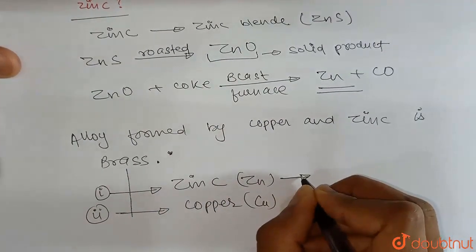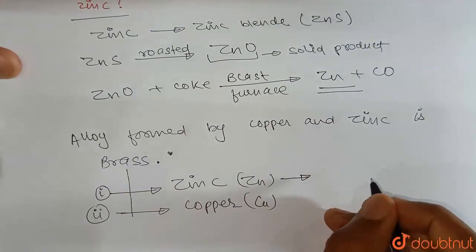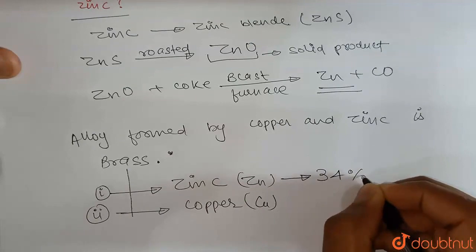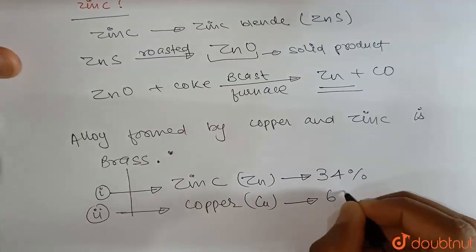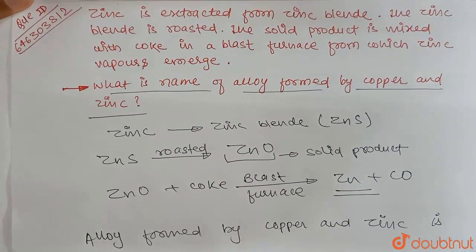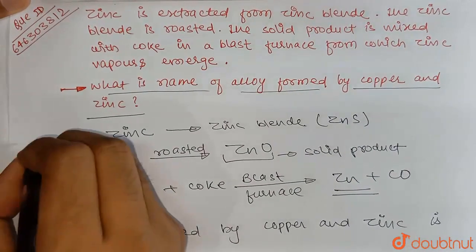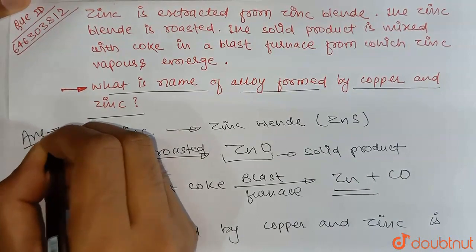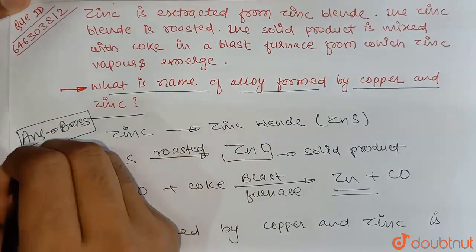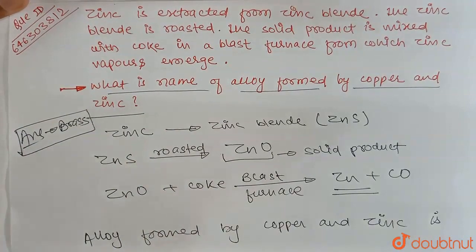Zinc's percentage is basically 34% and copper is 66%. So what is the answer? Alloy formed by copper and zinc is brass. So the answer is brass. Thank you.